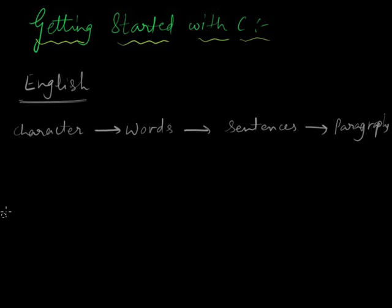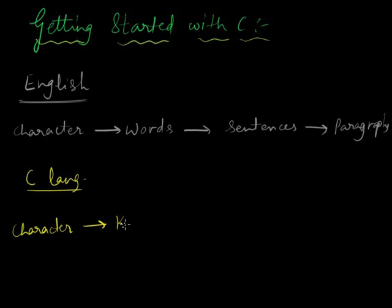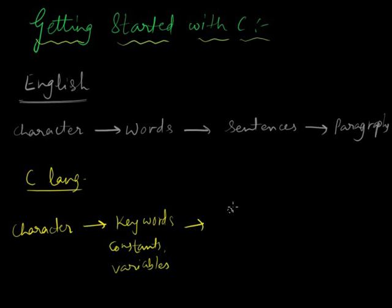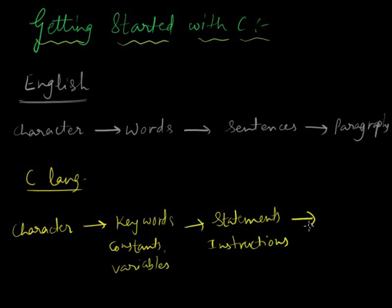Quite similar is the case with C. In the C language, we have characters. Characters form keywords — instead of words, we have keywords. We also have constants and variables. These keywords, constants, and variables combined together form statements, similar to sentences in English.